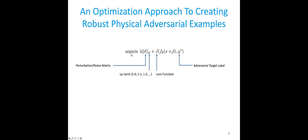The adversarial instance x plus delta is given to the target model such that the model makes adversarial predictions, predicting the label for the adversarial instance to be y-star, which is the adversarial target. By minimizing this simple objective function, we are able to optimize the best delta to fool this specific machine learning model.